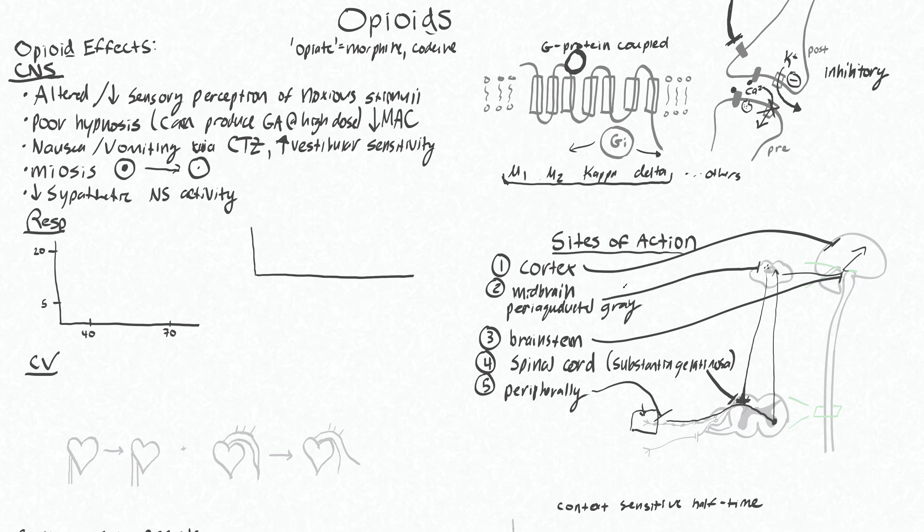With all those sites of action in mind, let's go back and talk about the respiratory effects of opioids. Remember, this is from acting on the brainstem where your respiratory centers are in the medulla. Basically two main effects, but what you'll see after giving someone a big dose is slow and deep breaths.